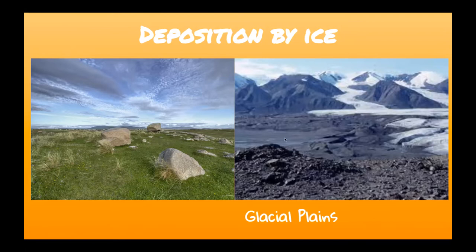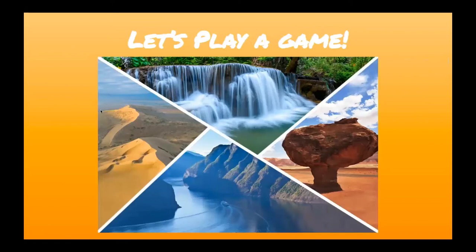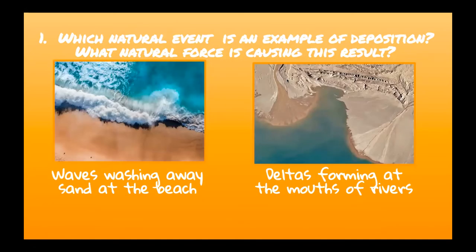Now we're going to play a game. You've heard about erosion and deposition; now you'll look at pictures or scenarios and guess which is an example of deposition. There are five questions. Question one: which natural event is an example of deposition? On the left: waves washing away sand at the beach. On the right: deltas forming at the mouths of rivers. Which is deposition?